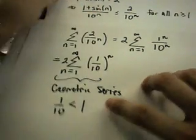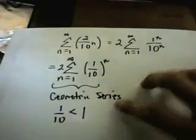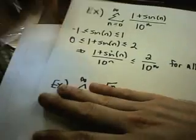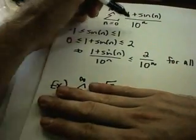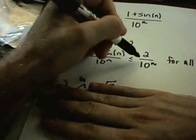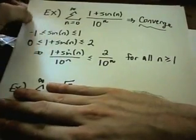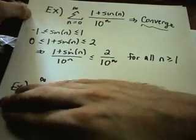We've shown that 1 plus sine of n over 10 to the n is smaller than that convergent geometric series. Well, since the geometric series converges and this one is smaller, this series will also converge as well. So there's an example of the direct comparison test.